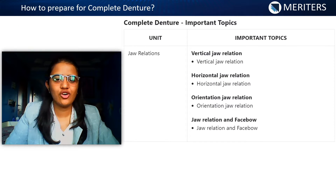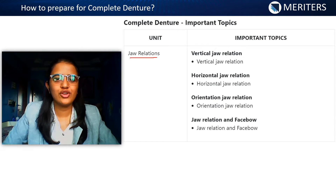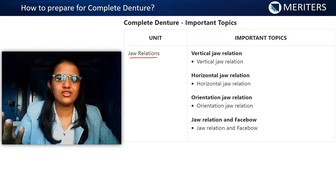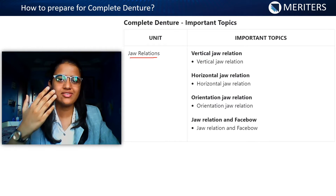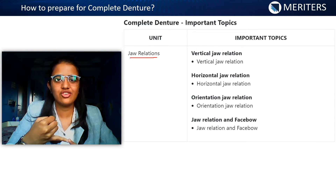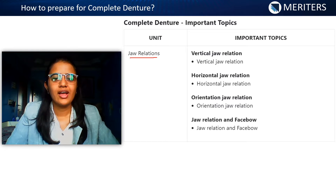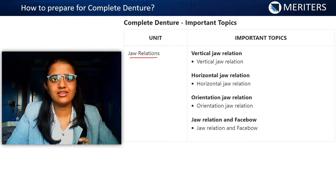The next topic is jaw relation. Before knowing jaw relation, you should know mandibular movements — what the appearance of mandibular movements looks like from different locations. From the center, it looks like a shield shape; from the side, it looks like a teardrop. Bennett movement and the Bennett angle are also very important.